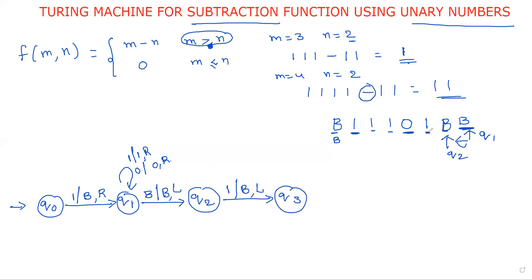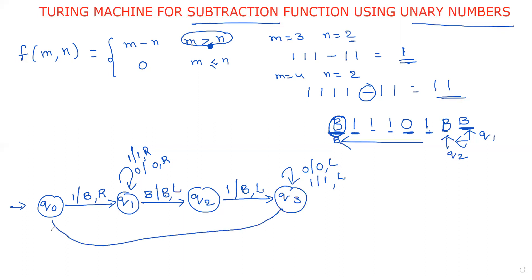This process is repeated: one is replaced with one, zero is replaced with zero — a self loop at q2 — until blank occurs. At state q3 we have a self loop: zero replaced with zero, one replaced with one. This process is repeated until blank. Whenever blank occurs, blank is replaced with blank and move to the right direction.